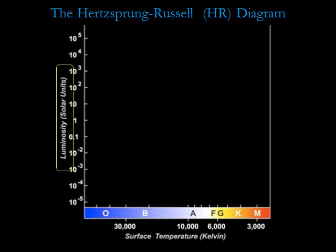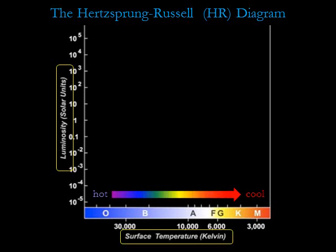The luminosity on the vertical axis is given in units of the sun's luminosity. Since there is such a wide range of stellar luminosities, we keep the graph compact by making each tick mark represent a luminosity ten times as large as that of the prior tick mark. The spectral type on the horizontal axis represents stellar surface temperature. On an HR diagram, the temperature decreases from left to right. Each point on the HR diagram represents a unique combination of spectral type and luminosity.